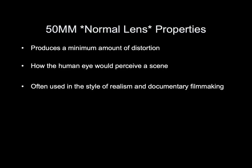Normal lens properties: produces a minimum amount of distortion, approximating how the human eye would perceive a scene. It is often used in the style of realism and documentary filmmaking. A normal lens would be the default lens on your phone or a camera that doesn't have interchangeable lenses.